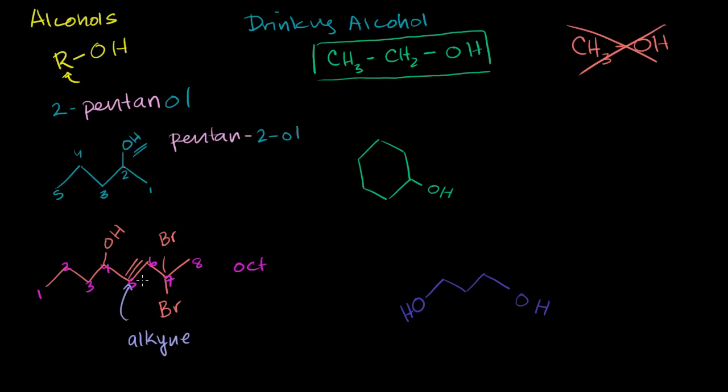Now we have to specify where that triple bond is. The triple bond is on the five carbon. You always specify the lower number of the carbons on that triple bond. So it is oct-5-ine that tells us that's where the triple bond is. And then we have the OH on the four carbon. So four, four, 4-ol.